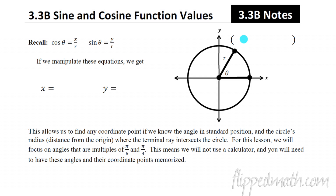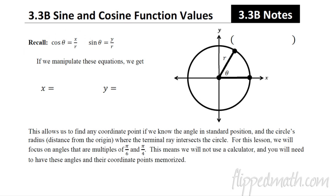Welcome back to lesson 3.3, part b. We're still talking about sine and cosine function values. Going back to the last lesson, we established that cosine of theta equals x over r — the horizontal displacement over the distance from the point to the origin — and sine of theta equals y over r, the vertical displacement. We came up with those two formulas.